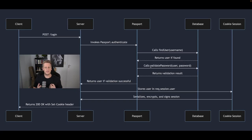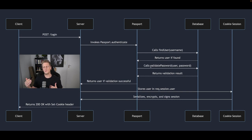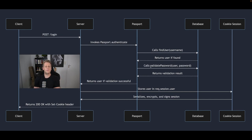I've put together this sequence or flow diagram here to explain what we're going to be doing specifically. We've got five verticals: on the far left we've got the client, then the server, then Passport, our database, and then something called cookie-session. Starting from the top left, the client — in our case Postman — is going to initiate a login POST request to the server.